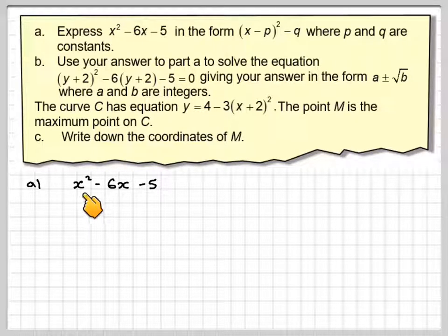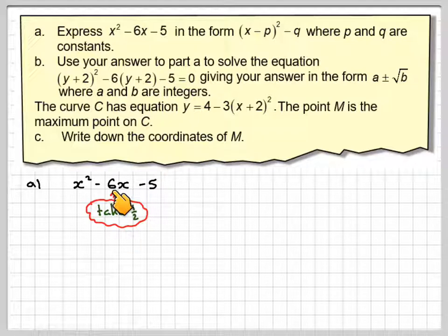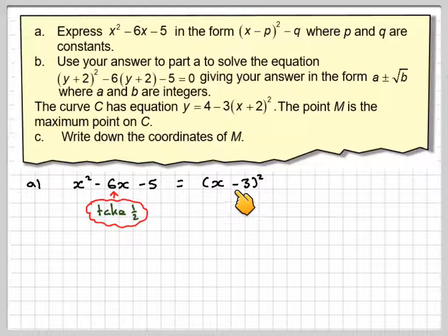So we've got our quadratic expression x² - 6x - 5. We know we have to take half of -6, which is -3, and then we proceed to write down (x - 3) in brackets and then squared. We've still got the -5.